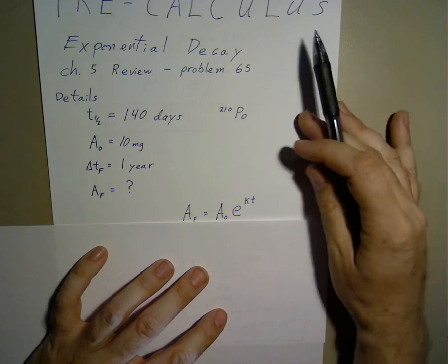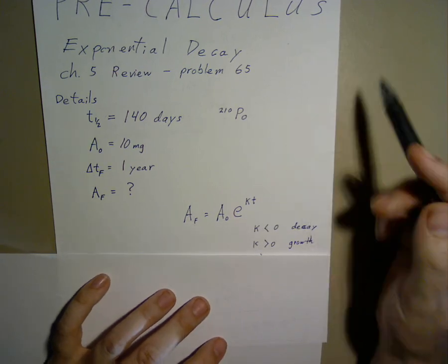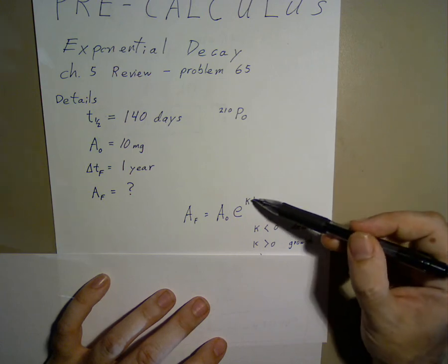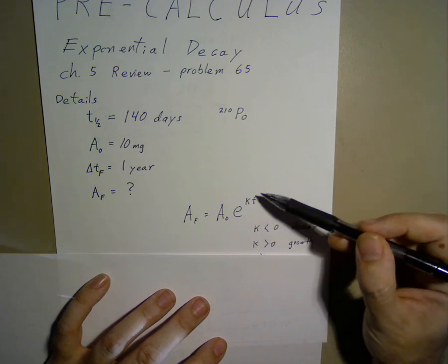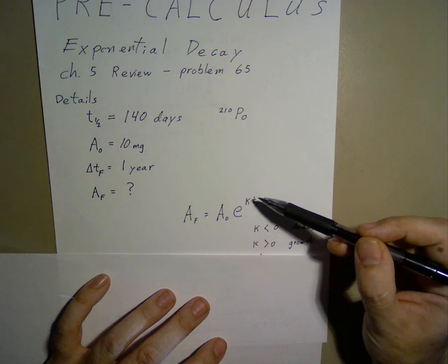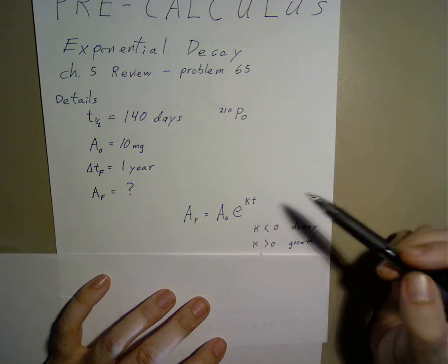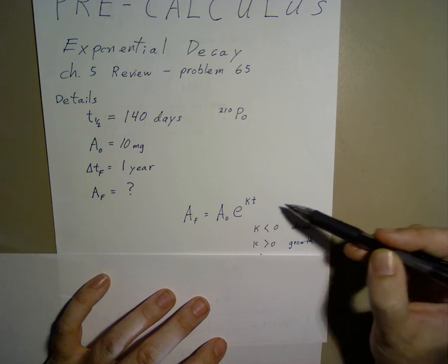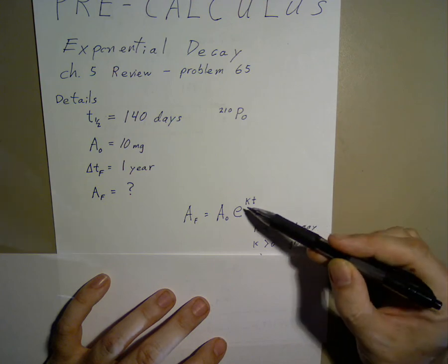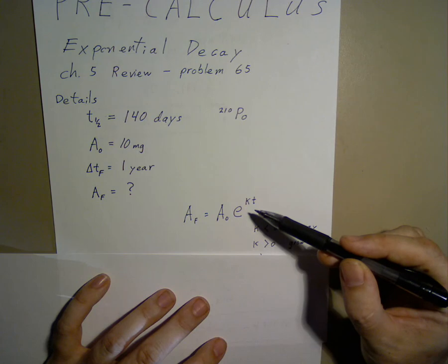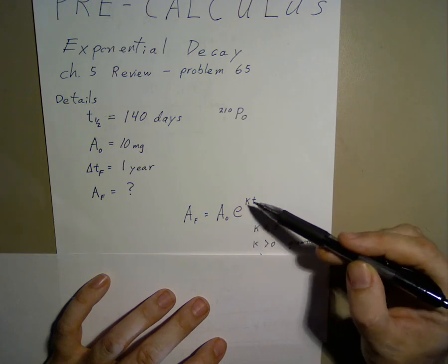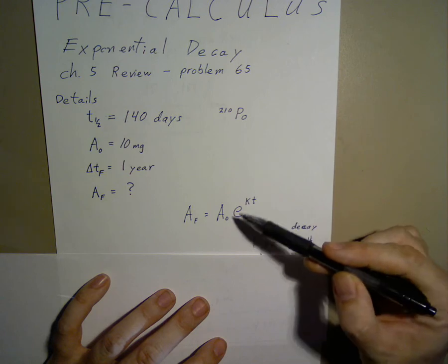Now, if k is a positive number, that means we have growth, because as t and k become larger, e to that power becomes a very large number and you have a growth situation. Whereas if k is a negative quantity, then as t becomes large, k times t becomes a very large negative number, and e to the power of a large negative number becomes a very small number.